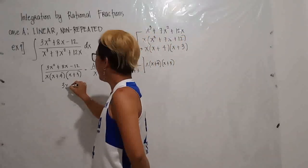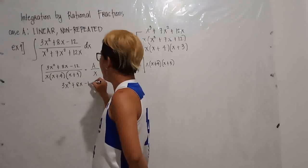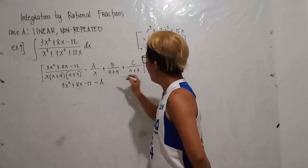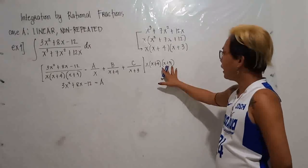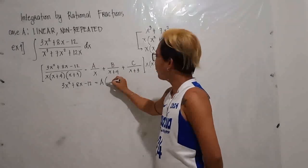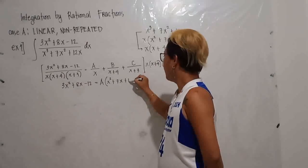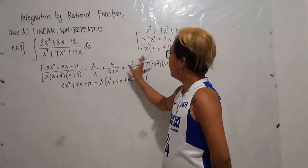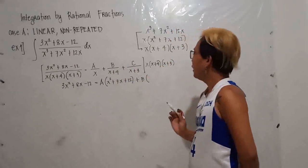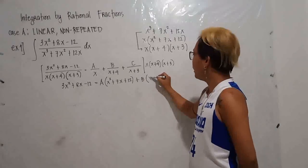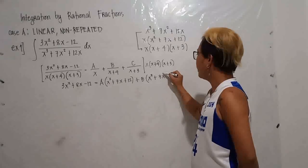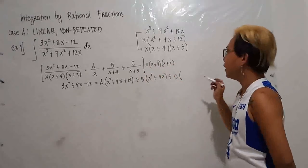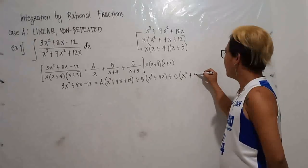You will now have 3x² + 8x − 12 equated to the expanded terms. For the A term, multiplying A by (x + 4)(x + 3) gives A(x² + 7x + 12). For the B term, x + 4 cancels, leaving B · x(x + 3), which is B(x² + 3x). For the C term, x + 3 cancels, leaving C · x(x + 4), which is C(x² + 4x).